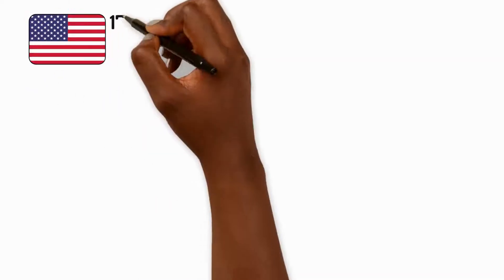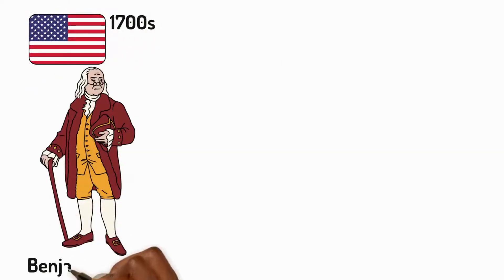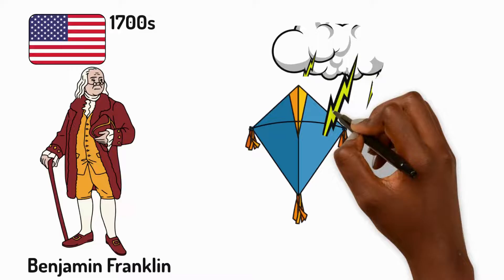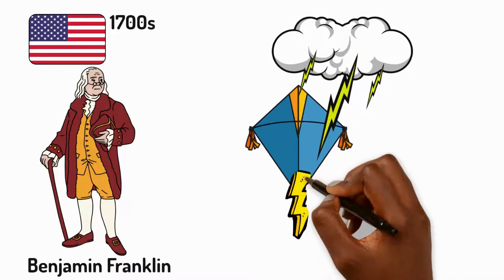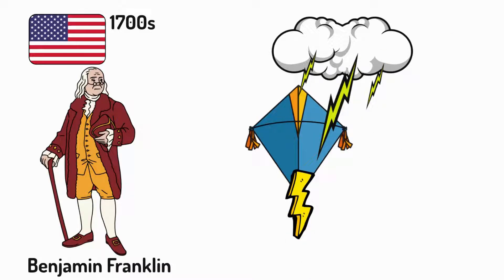In America in the 1700s, a scientist called Benjamin Franklin demonstrated that lightning is a form of electricity. By flying his kite in a thunderstorm and experiencing a spark through the string, Franklin proved that lightning and the amber effect were actually the same phenomenon. They were both forms of electricity.